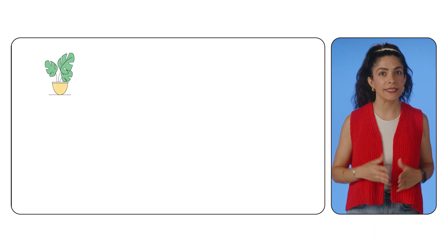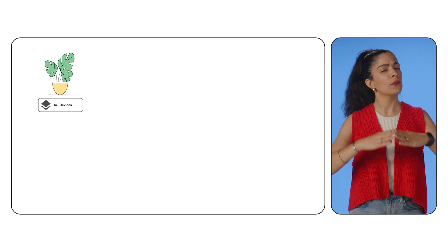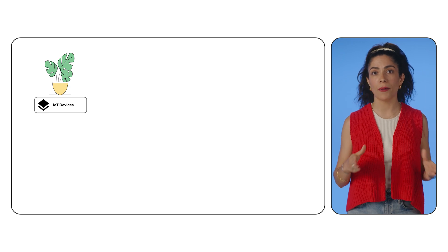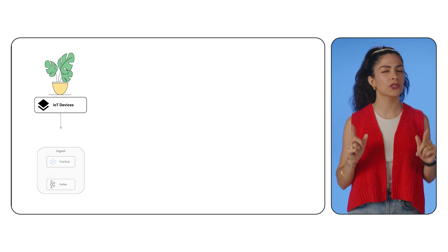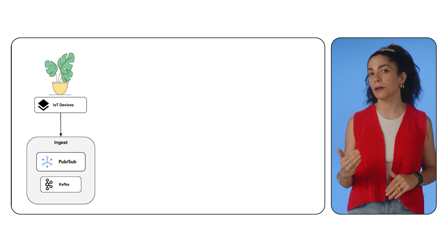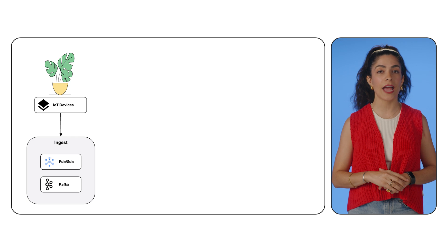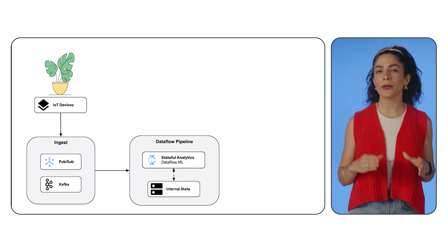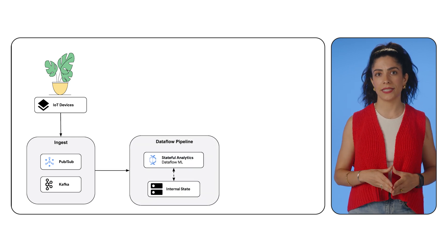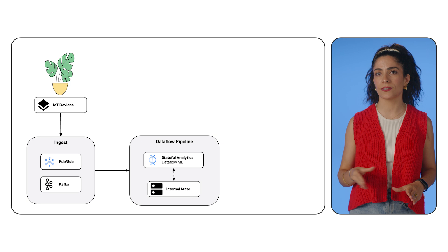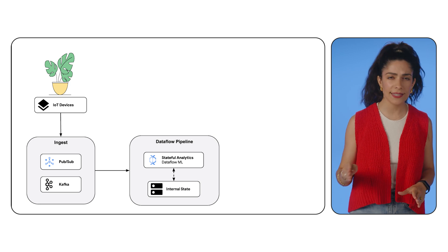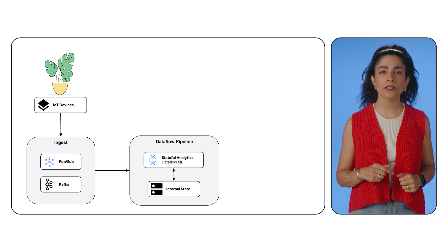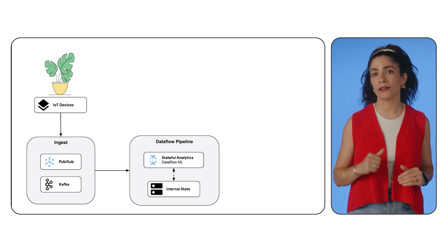Picture our space station's plant growth experiment, with thousands of sensors constantly monitoring environmental conditions and streaming them to PubSub, Kafka, or other MQTT-enabled brokers. Dataflow can analyze this data and perform stateful analytics, producing anything you desire, from formatting incoming records to computing aggregations.